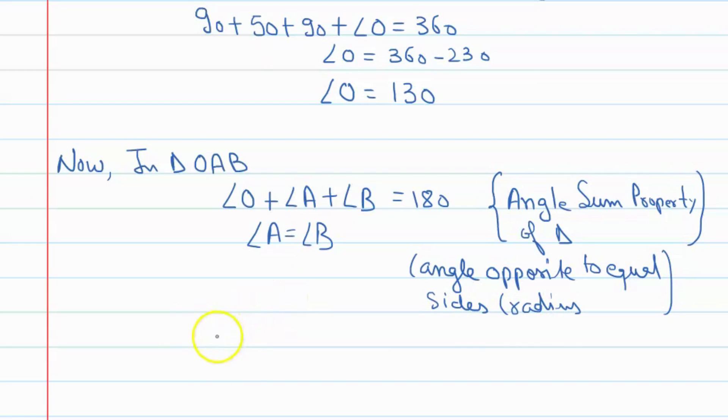Okay. What can you say here? You can say angle O plus double of angle A is equal to 180.